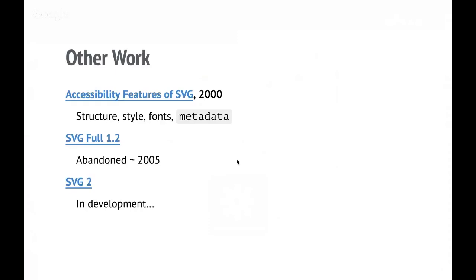There was an effort to make an SVG 1.2 which was abandoned around 2005. Essentially the people moved to something they wanted to call SVG 2, which was and still is in development, so there is no complete version. From about 2005, SVG started being implemented in what we would think of as mainstream browsers. By that point, you couldn't buy a modern mobile that didn't already implement SVG, so it was very widespread but not in actual web browsers.